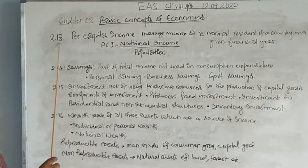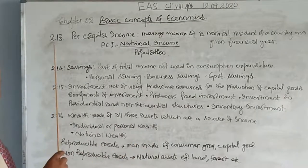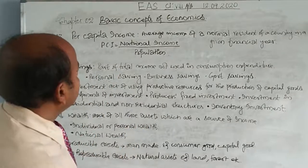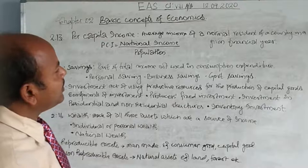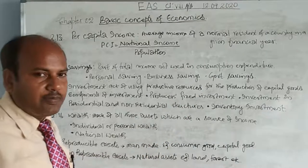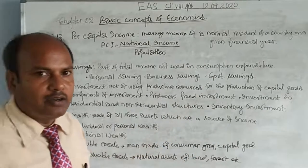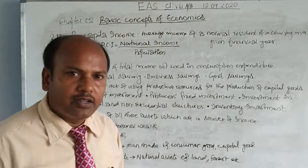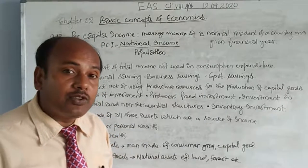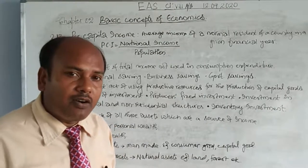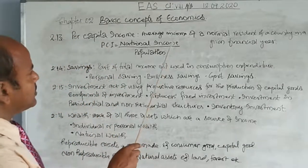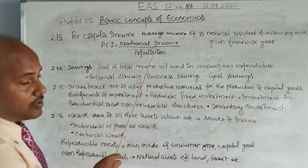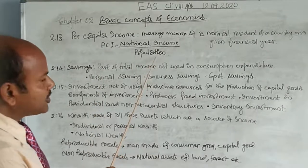The first is topic 2.13 — per capita income. Per capita income is the average income of a normal resident of a country in a given financial year. In a given one year, how much on an average does an individual resident of a nation earn — that is called per capita income. Symbolically, per capita income equals national income — the total income of a country — divided by the total population.